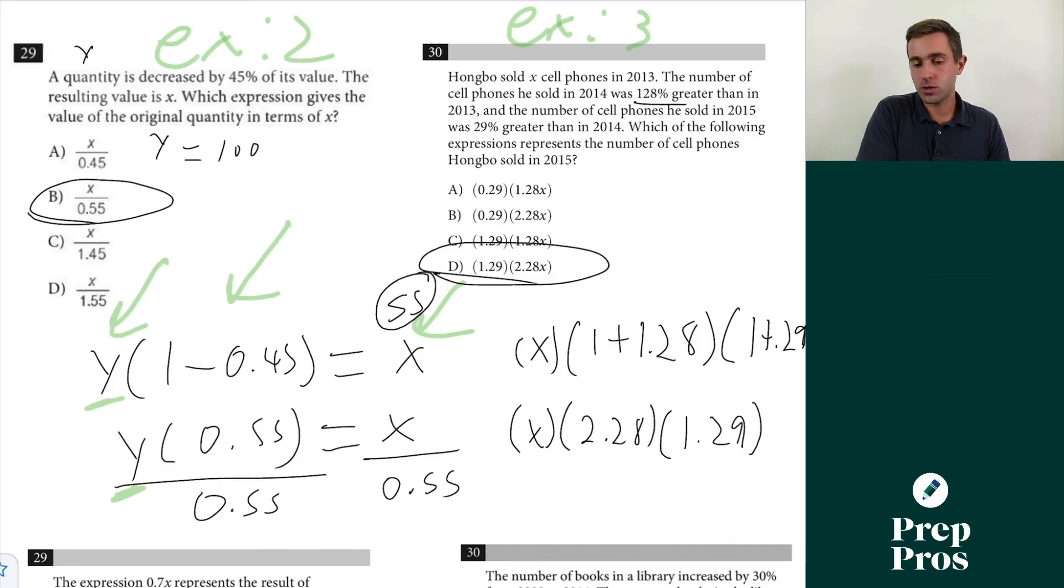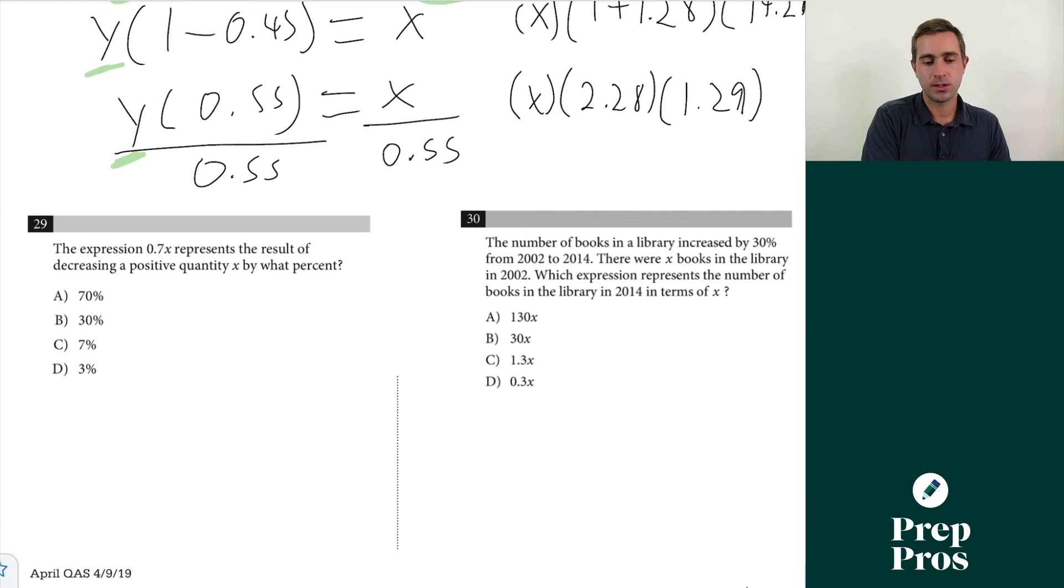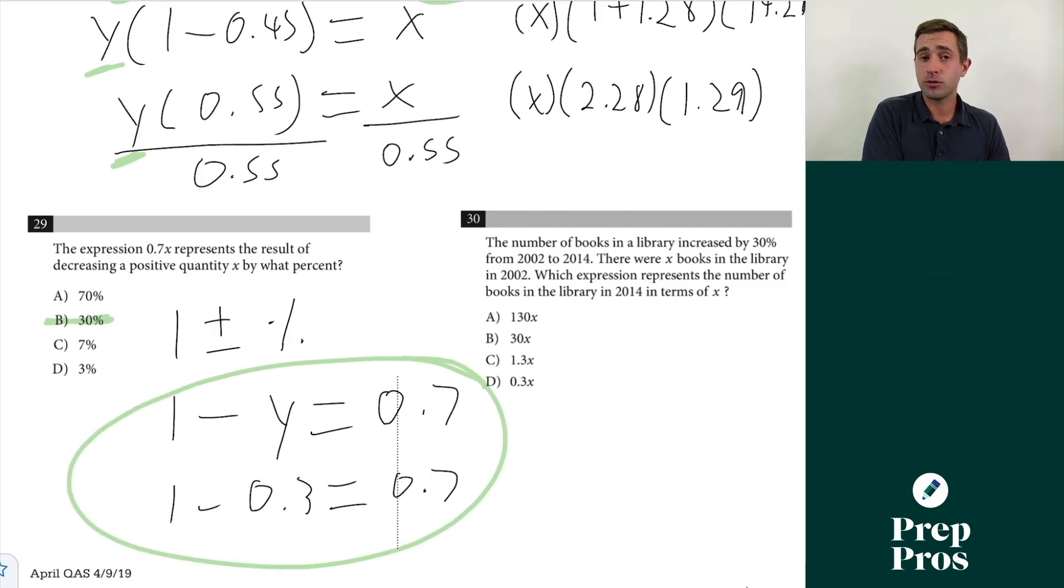As long as we understand our one plus or minus, we can really start to work through these questions quite easily. The expression 0.7x represents the result of decreasing a positive quantity x by what percent? What we always know is it's one plus or minus our percent expressed as a decimal. So all we're really looking for here is one minus y is going to equal 0.7. This is just the difference between these two, and that's simply going to give us we'd have to have one minus 0.3 is going to equal 0.7. So that's going to tell us it's simply just going to be 30%.